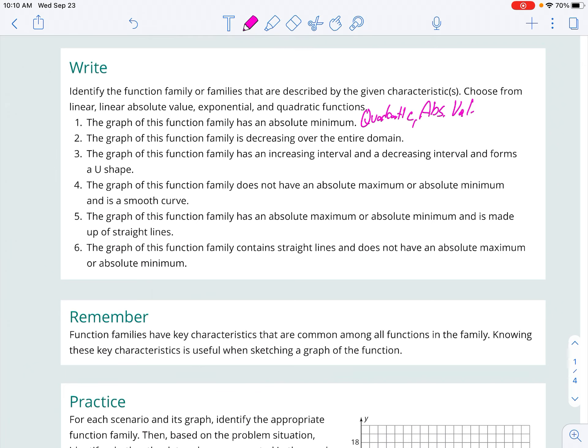The graph of the family that is decreasing over the entire domain. So those is where your eyes are just continuing to decrease if there's no turn, and that's just going to be either a linear or an exponential graph. Up in the quadratic, that's where we had a minimum for a U-shaped, and that's where we had a minimum for a V-shaped absolute value.